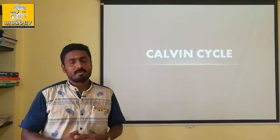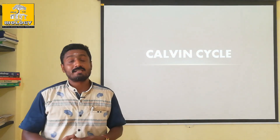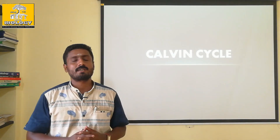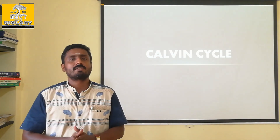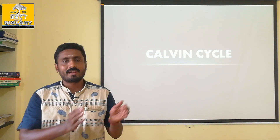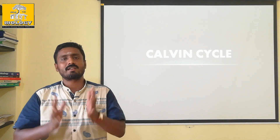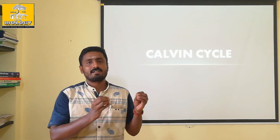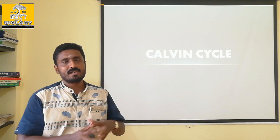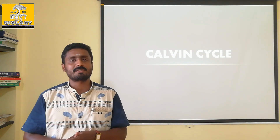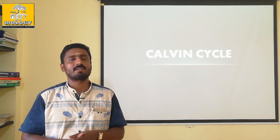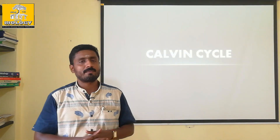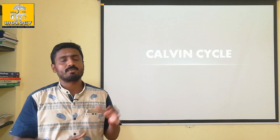In Calvin Cycle, there is a C3 Cycle. There is a dark reaction in Calvin Cycle. If you have a light reaction, it is a dark reaction in this process. Let's learn from cyclic and non-cyclic photophosphorylation, and the formation of ATP and NADPH2.